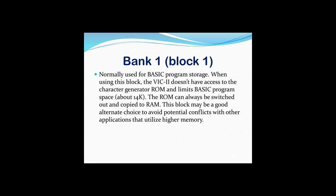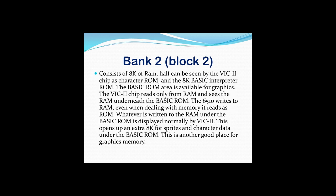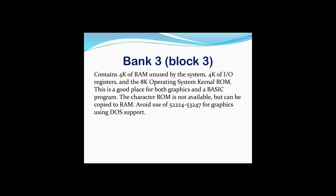Bank 1 is about being able to switch ROM out and copy it to RAM. Bank 2 consists of half 8K of RAM, seen by the VIC-II chip as character ROM and 8K basic interpreter ROM. The VIC chip only reads from RAM — it sees the RAM underneath the basic ROM; the 6510 writes to RAM even when dealing with memory. This opens up 8K of memory for sprites and character data under the basic ROM. Bank 3 contains 4K of RAM unused by the system, 4K I/O registers, 8K operating system kernel ROM — another good place for graphics — and if you're doing BASIC and character ROM is not available, it can be copied to RAM.